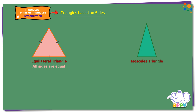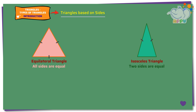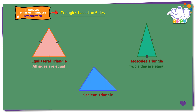Isosceles triangle. An isosceles triangle is a triangle that has two sides equal. Here we mark two sides with one hatch mark, and the other side with two hatch marks, indicating that it is different from the other two sides.